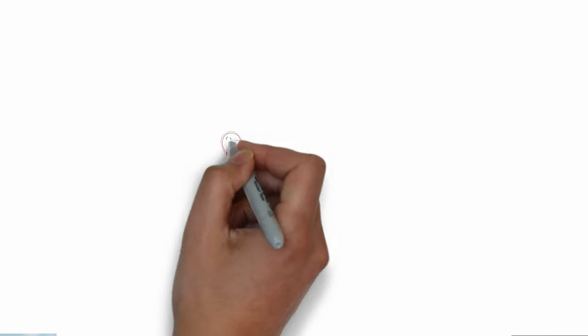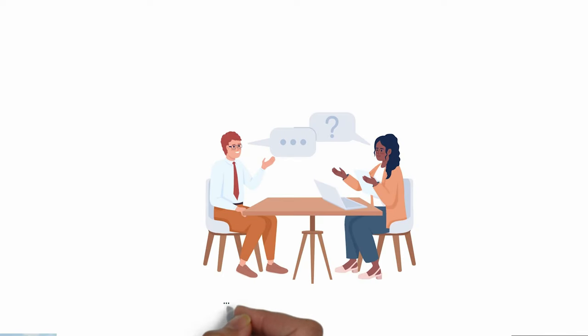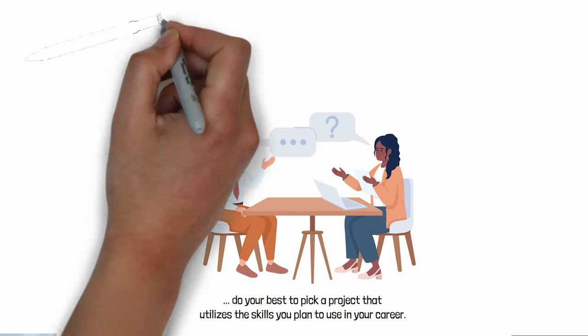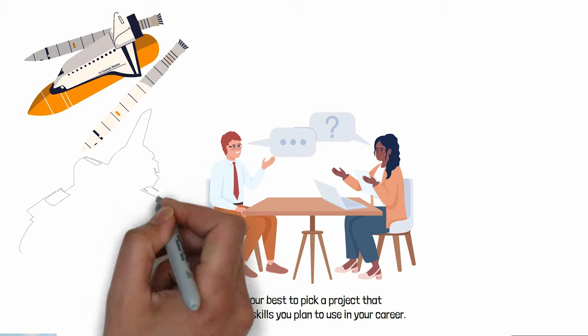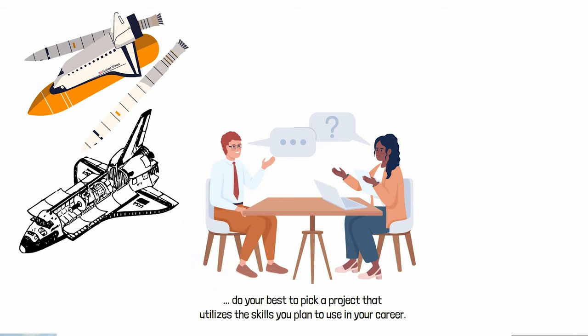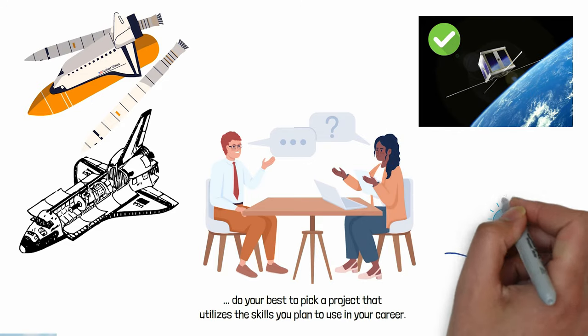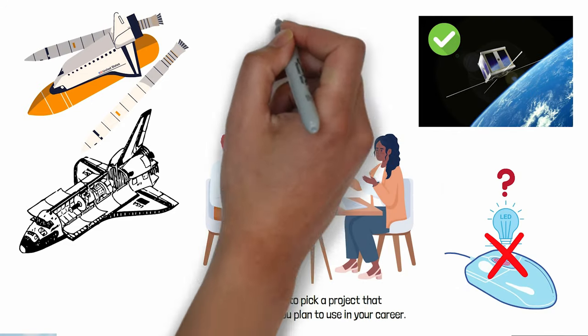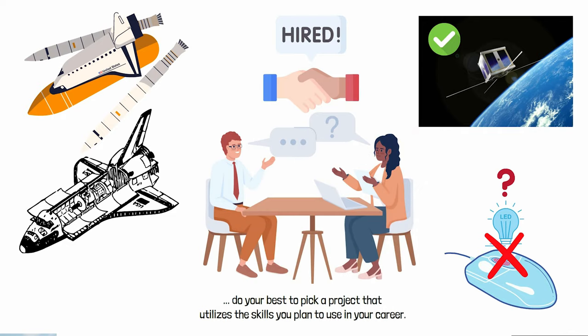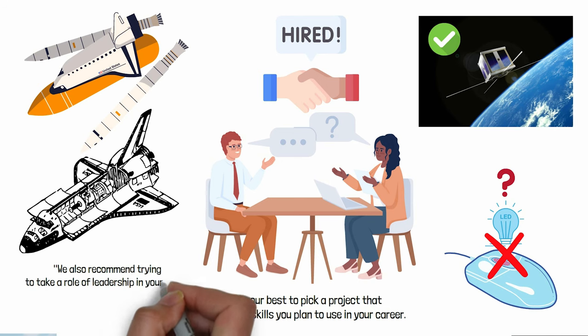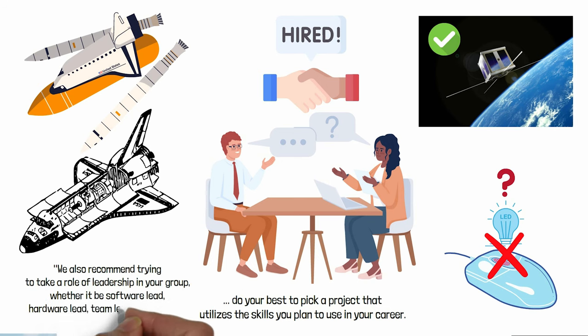This capstone project is almost always discussed in your first interviews out of college, so do your best to pick a project that utilizes the skills you plan to use in your career. For example, if you were interviewing for your dream job designing hardware for space shuttles, don't you think the interviewer would rather hear about how you did so for a cube satellite rather than work on the LED light show on a gaming mouse? Obviously, the prospect with more relevant, hands-on experience will get the job. We also recommend trying to take a role of leadership in your group, whether it be software lead, hardware lead, team lead, or any other. This too does wonders for your chances in finding a job right out of college.